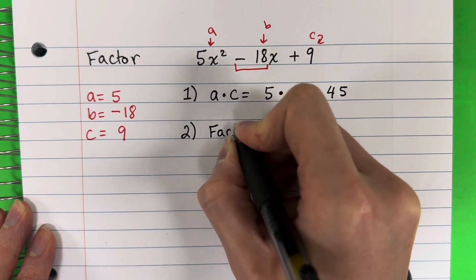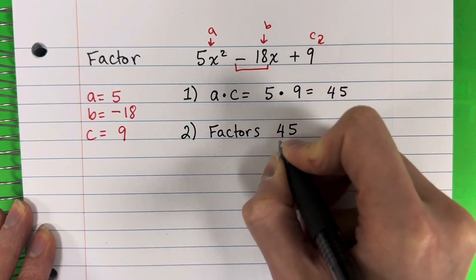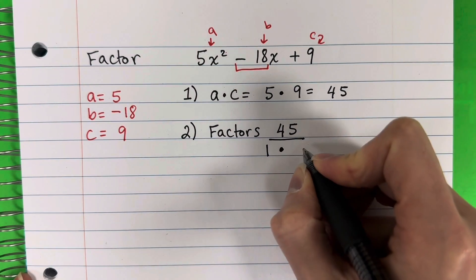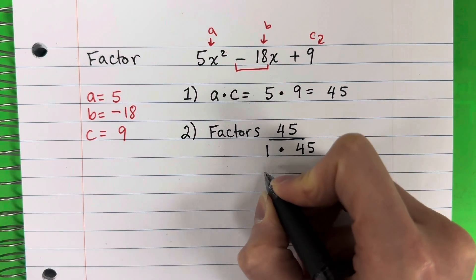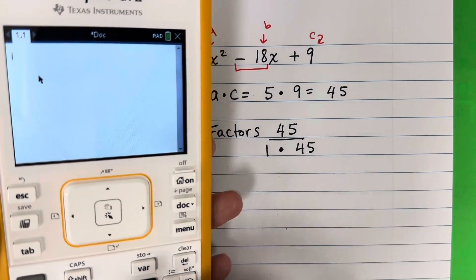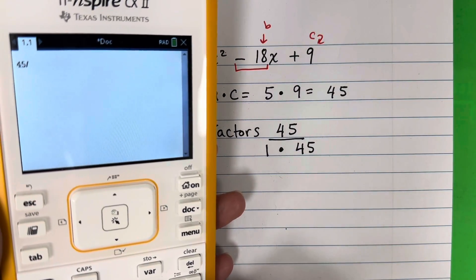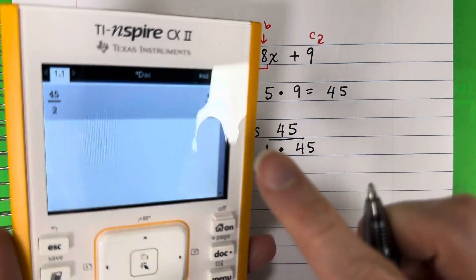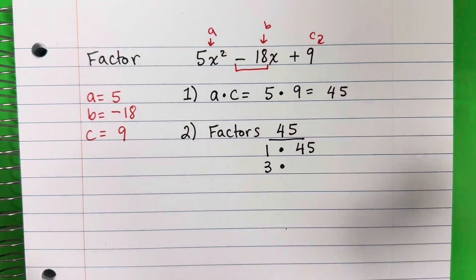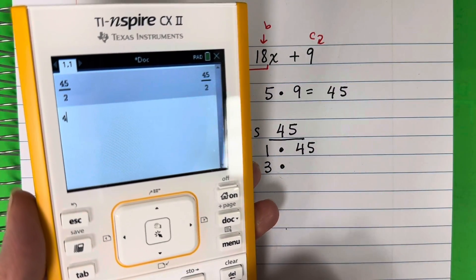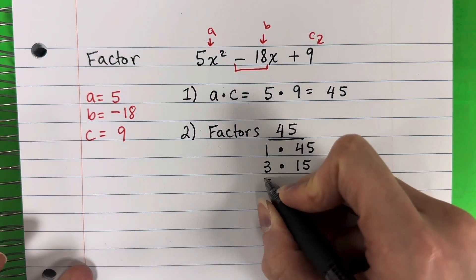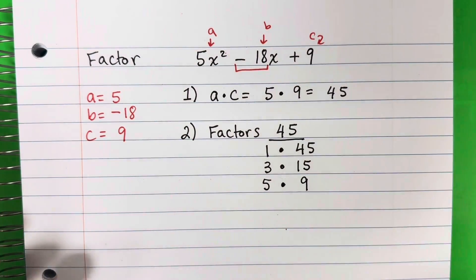Step two, we are going to find the factors of 45. What two numbers can I multiply to get 45? Starting with 1: 1 times 45. For 2, you cannot get 45 as a whole number — 45 divided by 2 is a fraction, so 2 does not work. Then 3: 45 divided by 3 is 15, so 3 times 15 works. 4 does not work. 5 does work — 5 times 9 is 45.